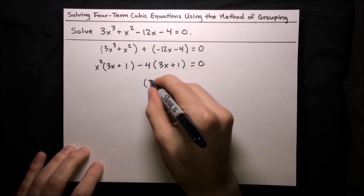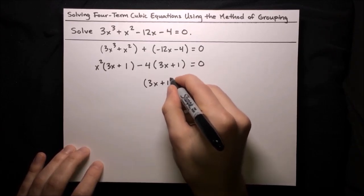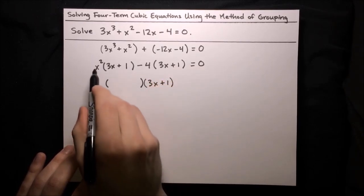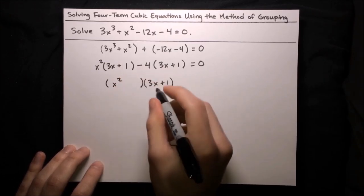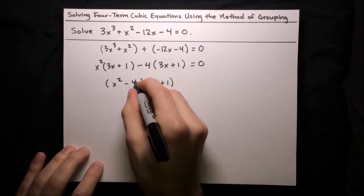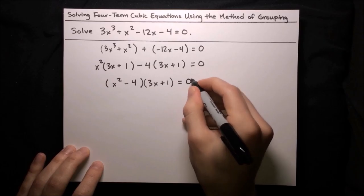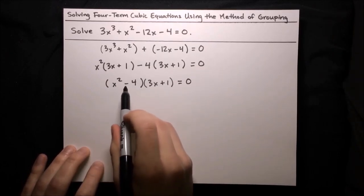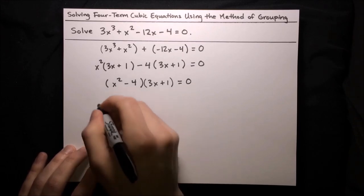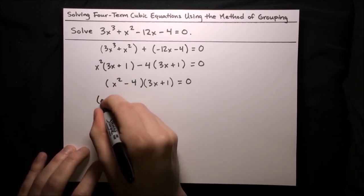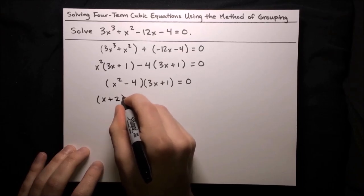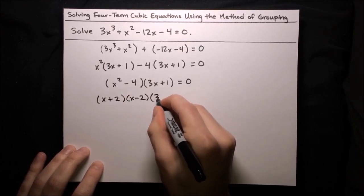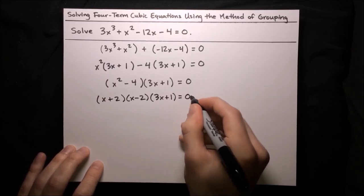We can factor out 3x plus 1 from both groups, leaving x squared minus 4 inside. Can we factor the quadratic any further? Well, it's a difference of squares, so yes we can. We factor it into x plus 2 times x minus 2, times 3x plus 1, equals 0.